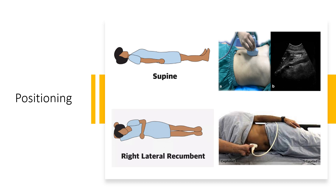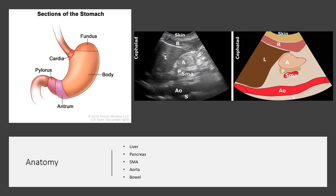For positioning, patients are imaged in both the supine and the right lateral decubitus (recumbent) position. The right lateral decubitus position is best for interpretation because the gastric contents are able to gravitate down towards the antrum. Scanning only in the supine position would underestimate the amount of gastric contents. Start with the patient supine, place the transducer in the long axis orientation in the sub-xiphoid space, then repeat the scan in the right lateral decubitus position to increase sensitivity.